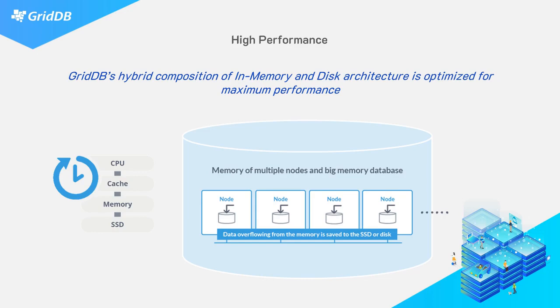The image on the left shows the data priority structure: CPU, cache, memory, and finally the disk. Because the data is distributed across all nodes, GridDB is able to utilize parallel processing.